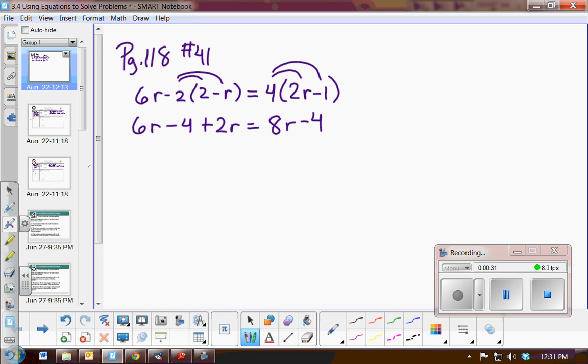Now I notice on the left side of the equation I have some like terms, so I'm going to simplify once more. Now I have 8r minus 4 equals 8r minus 4.